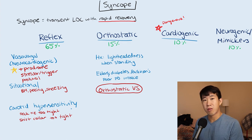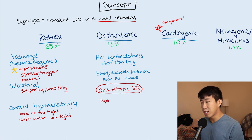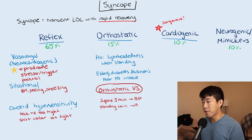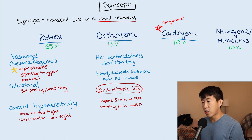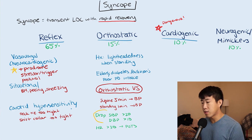You can perform orthostatic vital signs yourself at bedside. Have the patient supine for five minutes and check their blood pressure, then have them seated or standing for one minute and check again. A positive result — a common exam question — is a drop in systolic blood pressure greater than 20 mmHg or a drop in diastolic blood pressure greater than 10 mmHg from supine to standing. A heart rate increase of greater than 30 would be suggestive of postural tachycardia syndrome (POTS).